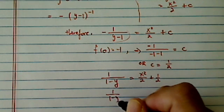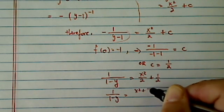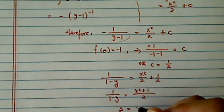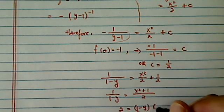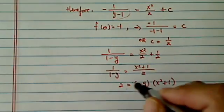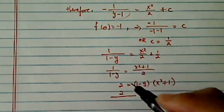So 2 over x squared plus 1 is equal to 1 minus y times x squared plus 1. I don't want to distribute it,